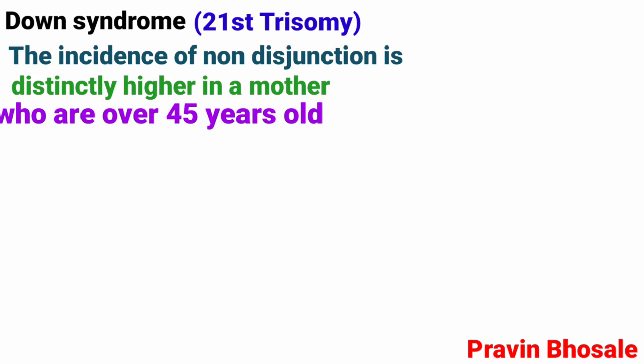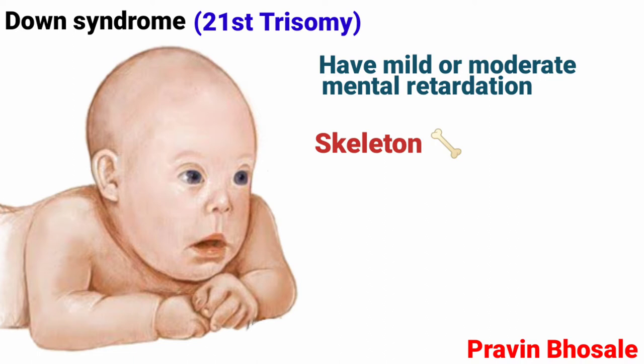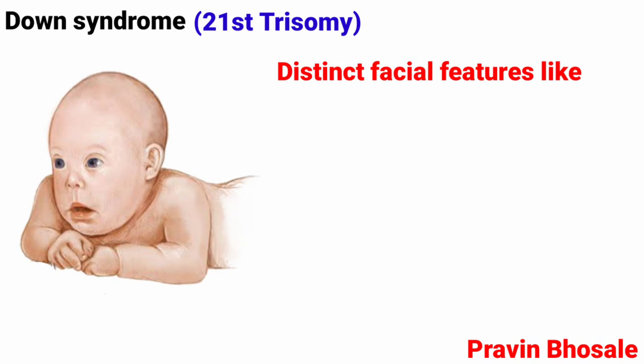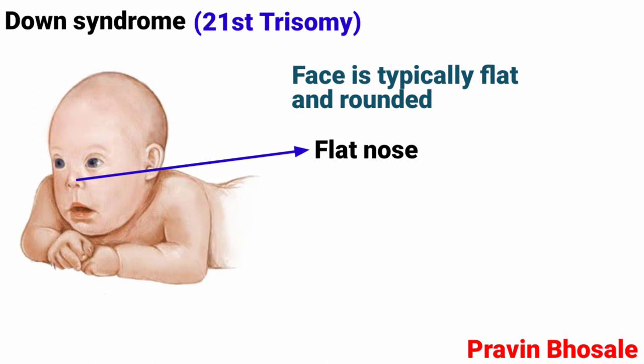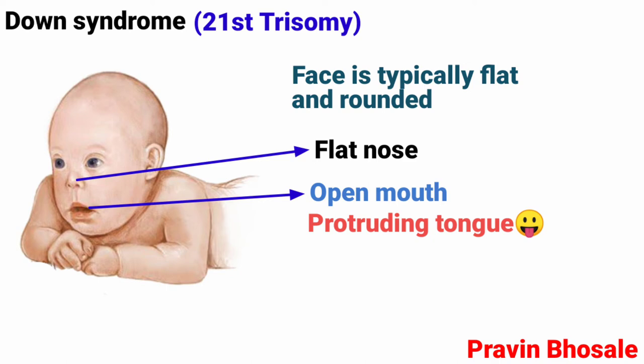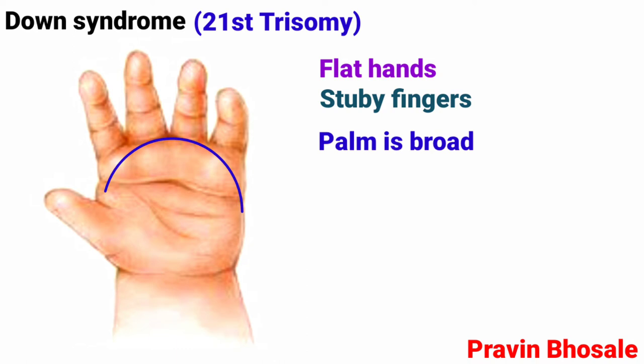Patients have mild or moderate mental retardation and poor skeletal development. Distinct facial features include a small head, ears, and mouth. The face is typically flat and rounded with a flat nose, open mouth, and protruding tongue. Eyes slant up and out with internal epicanthal folds. Hands are flat with stubby fingers and a broad palm with a single palmar crease.